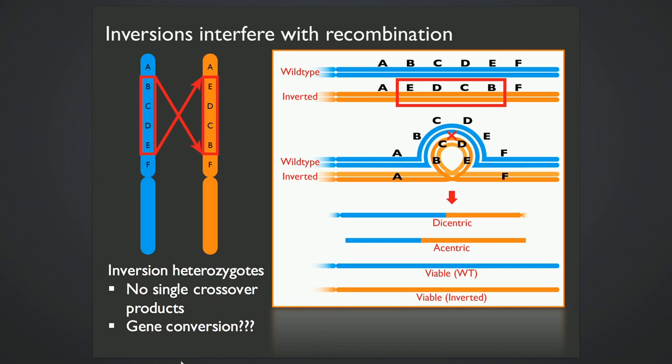Now, when you have an inversion heterozygote, pairing happens a little bit differently during meiosis. So let's consider a wild-type chromosome with gene order ABCDEF and an inverted chromosome with this inversion EDCB. So in order for pairing to occur, one of these arrangements is going to form this loop which the other arrangement will conform to.